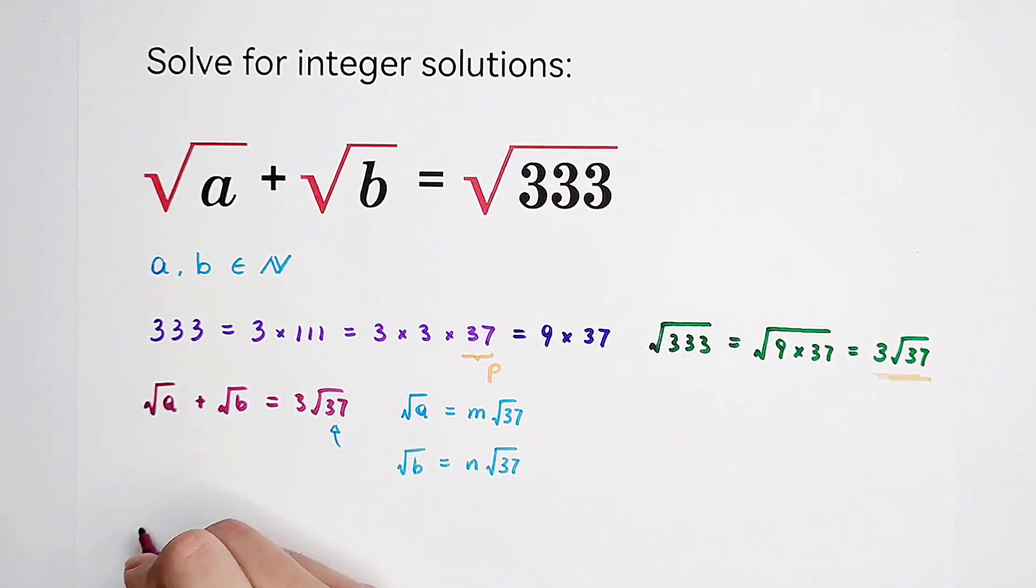Understand? For example, square root of 3 plus square root of 5. Of course, square root of 3 and square root of 5, both are not multiples of another square root. So this cannot be simplified. It is only equal to itself. So it cannot be written as something times a square root, or a square root of something.